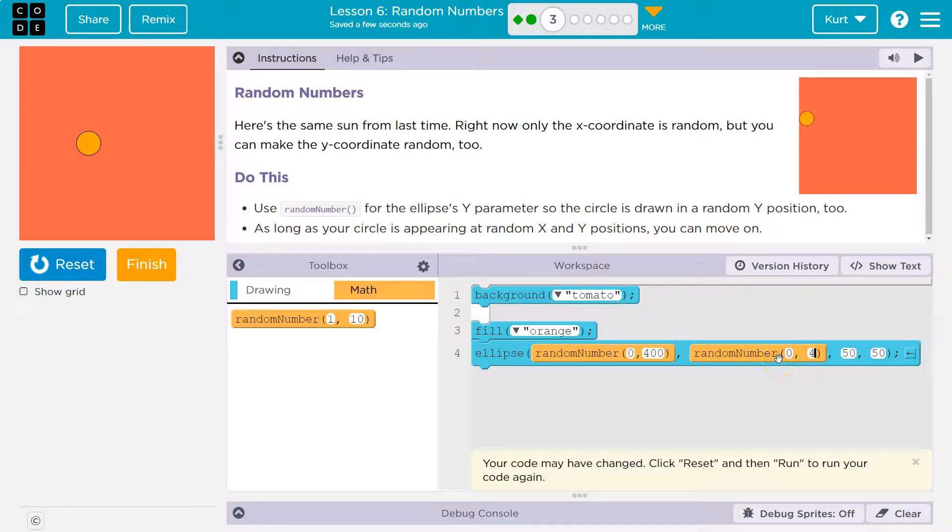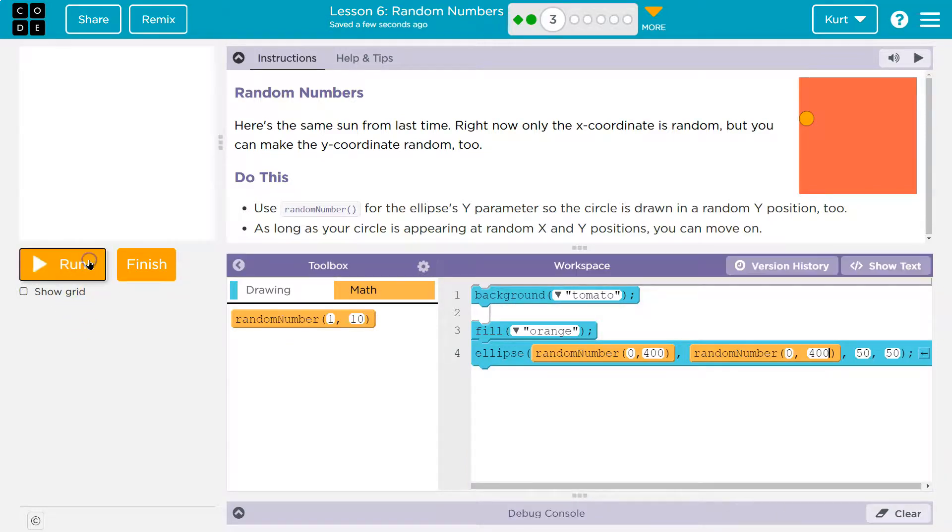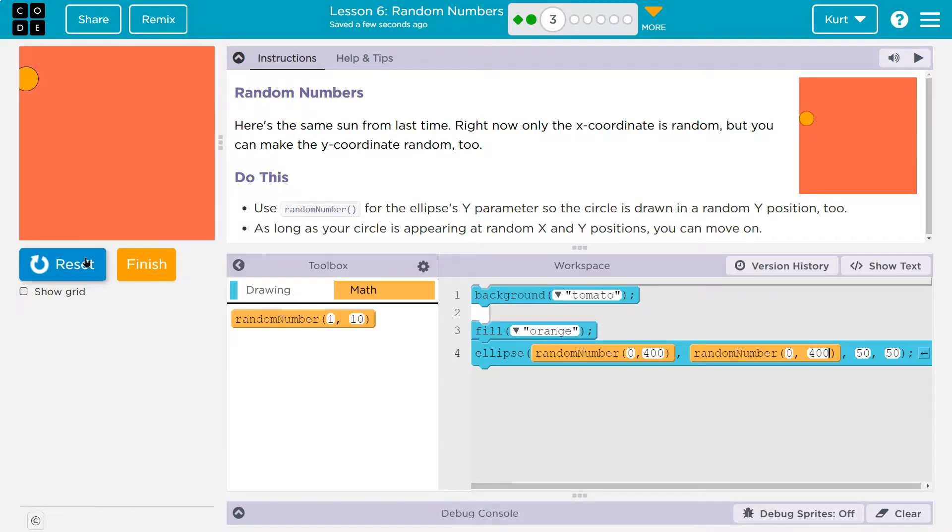And how about we do the same, 0 to 400, because that's the size of the screen. So now it should be able to go all over the place. Crazy. Okay, you get a picture. Onward.